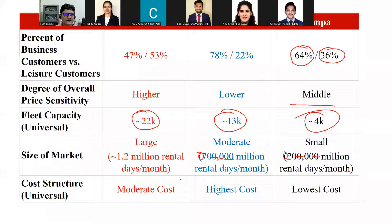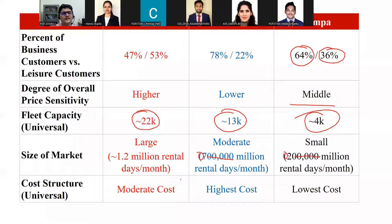To clarify rental days further: if one customer is renting a car for one day, that is one rental day. If 1,000 customers are renting cars on one day, that is 1,000 rental days. If 1,000 customers rent cars for all 30 days, that is 30,000 rental days. For example, in Orlando with 22,000 cars, to find the average number of cars rented every day, you divide by 30.